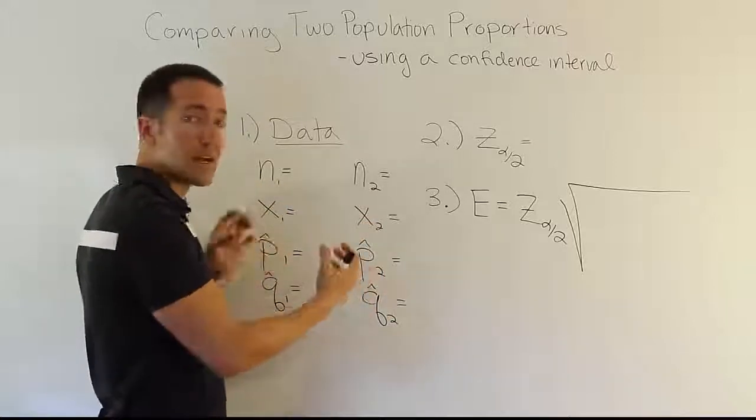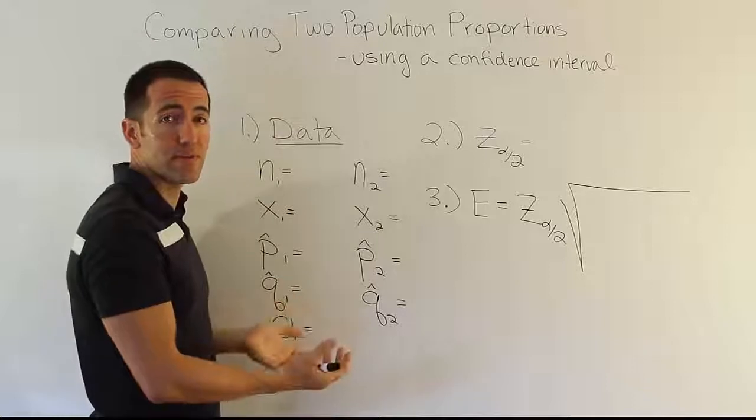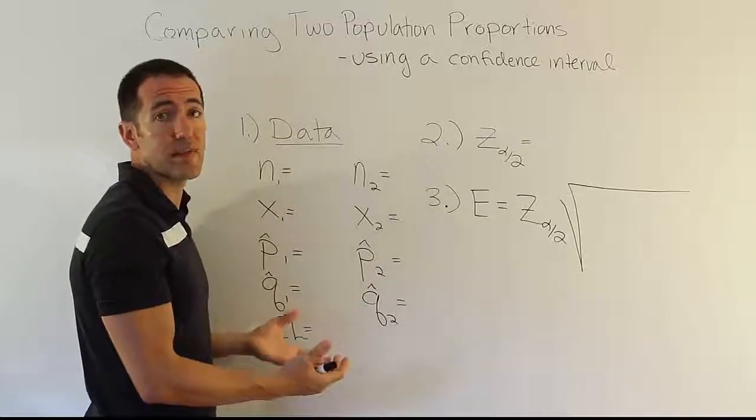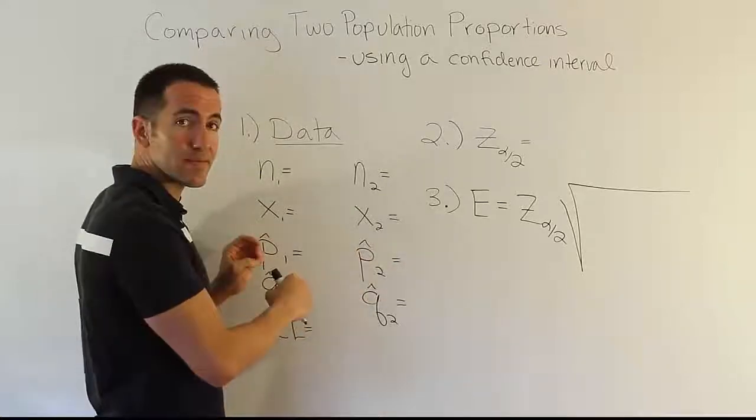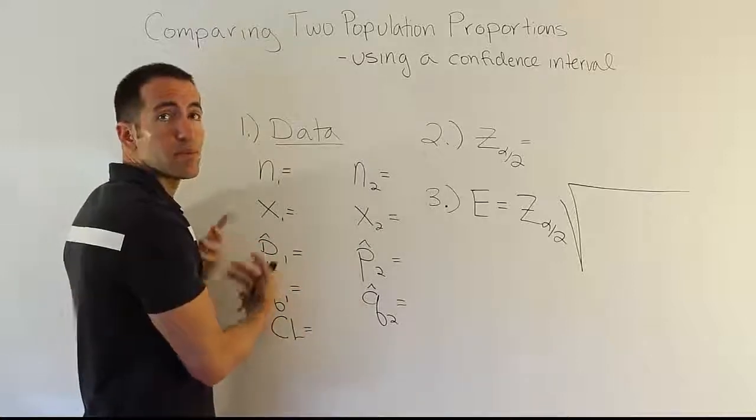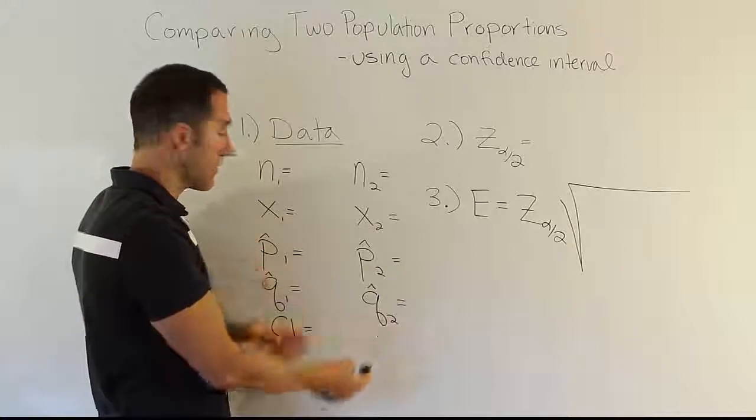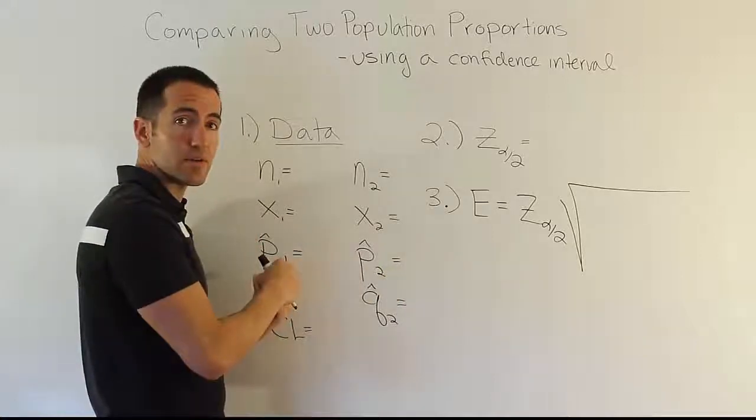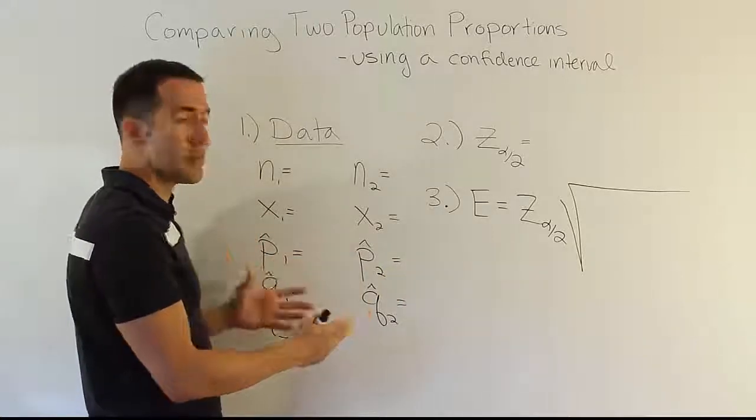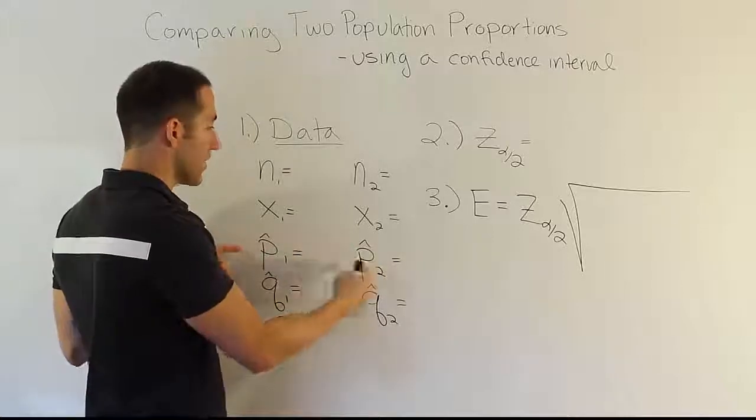For example, if we subtracted them and got zero, it would mean there's no difference between the two proportions. They are the same. If we subtract them and get a positive number, that means something. It means, say, for example, proportion 1 is larger than proportion 2. If we subtract these two numbers and get a negative, it means proportion 2 is larger than proportion 1. So, that sort of information is gained by subtracting these two things.